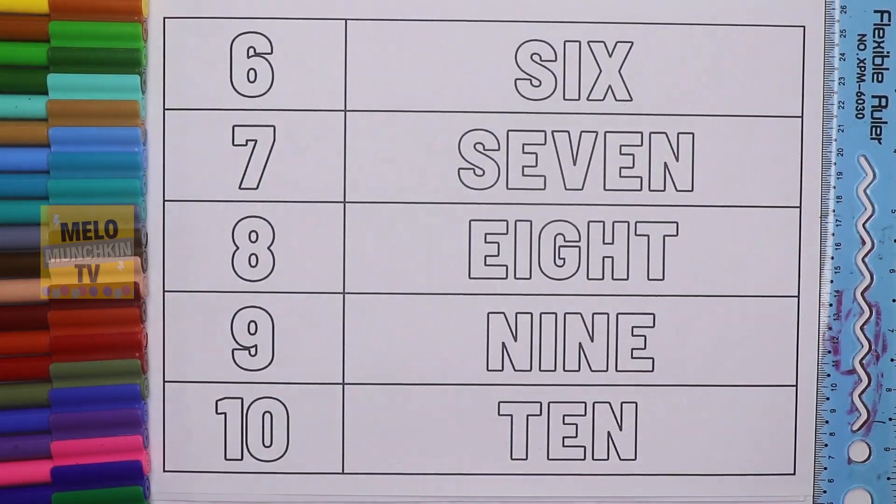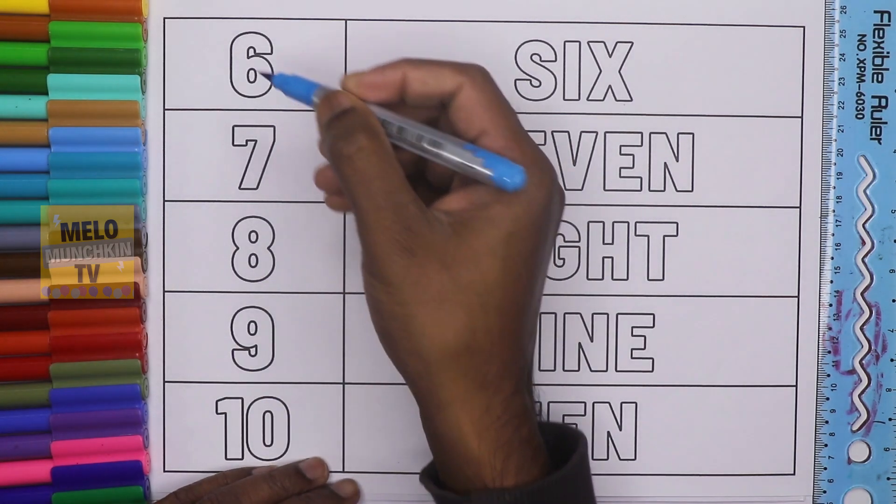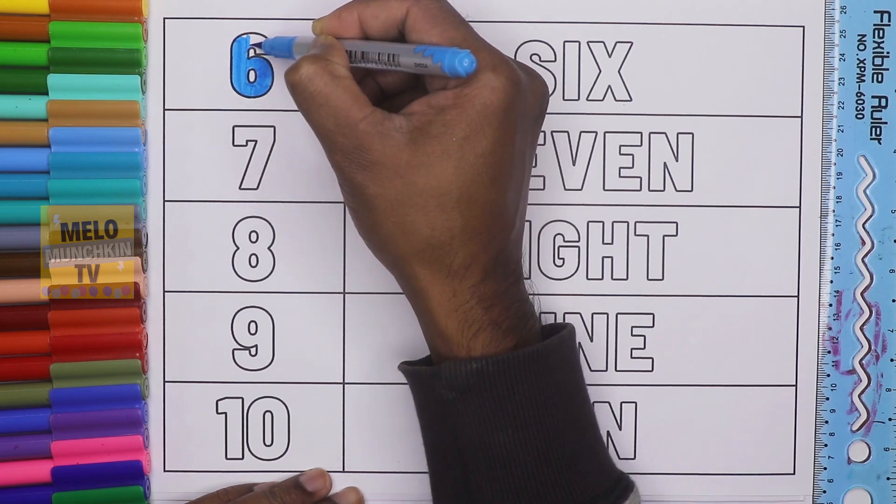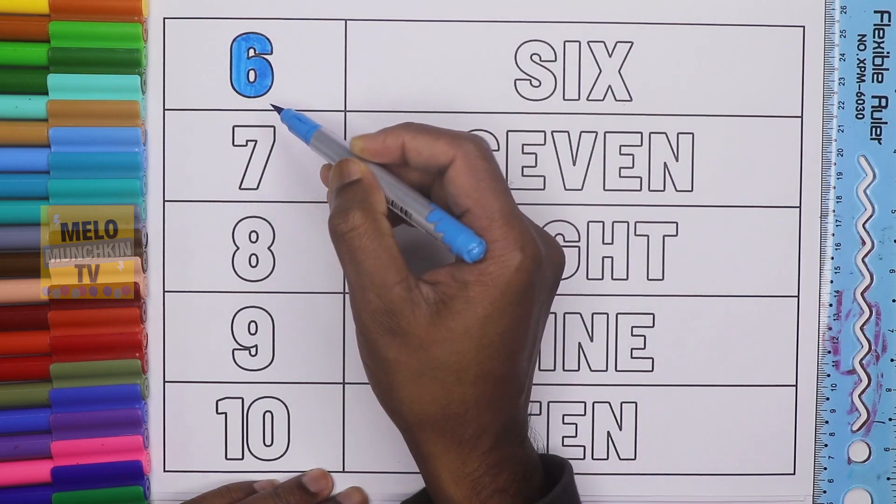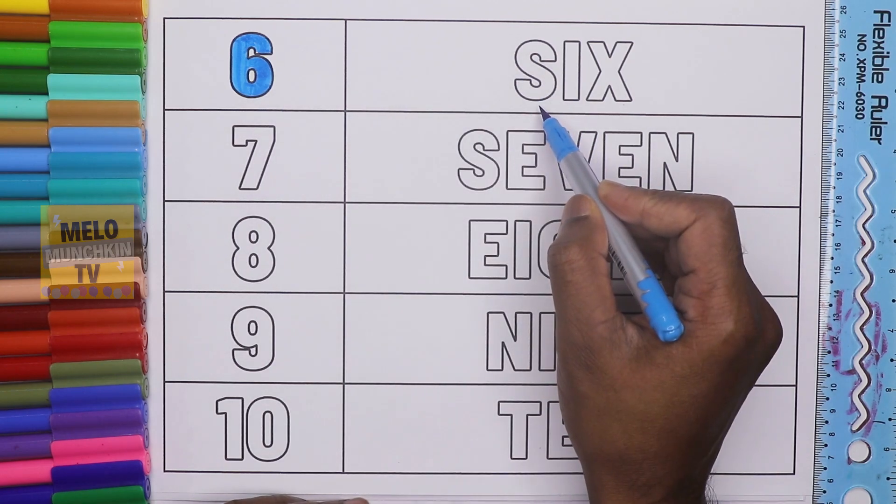Hello kids, today we'll learn numbers and number names from 6 to 10. In my previous video I have shown you how to write 1 to 10 with number names, so today we'll do from 6 to 10. So let's get started with blue color. This is 6.